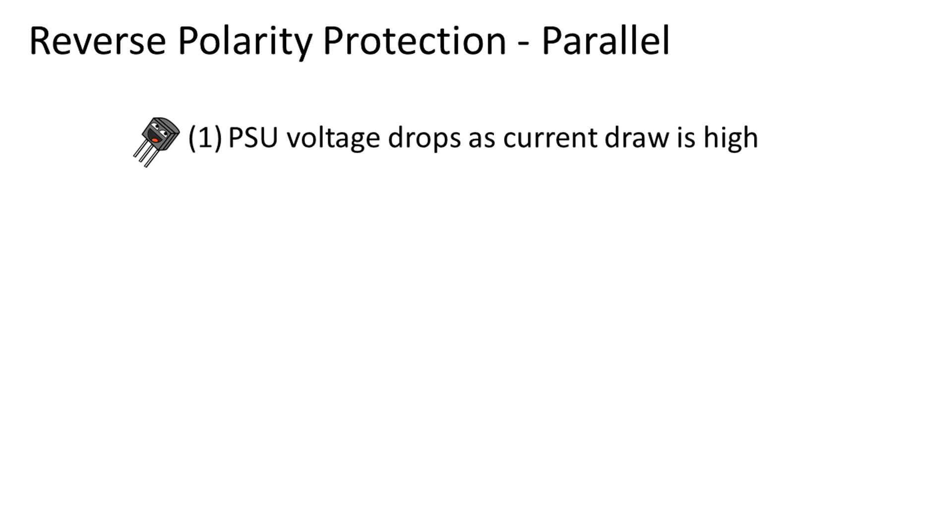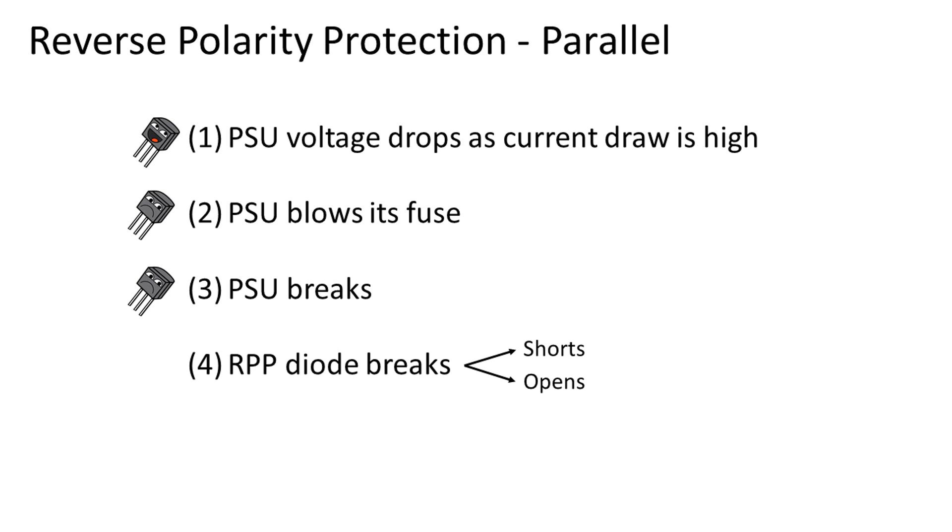1. The external power supply is smart. It detects an overcurrent situation that lowers its output voltage to protect itself. 2. The external power supply is rather dumb, but has a fuse that blows. 3. The external power supply is very dumb and something breaks inside of it.